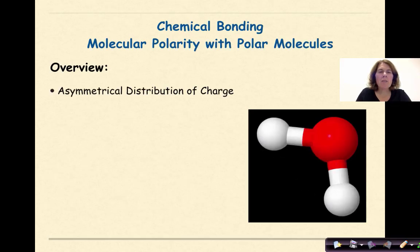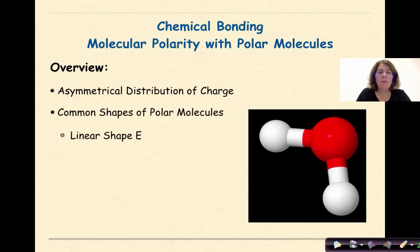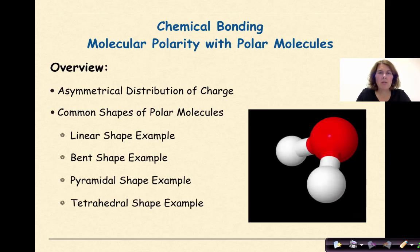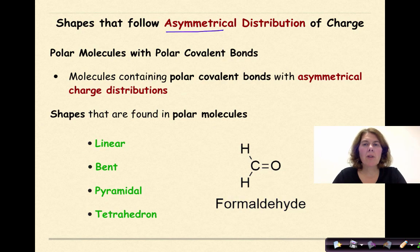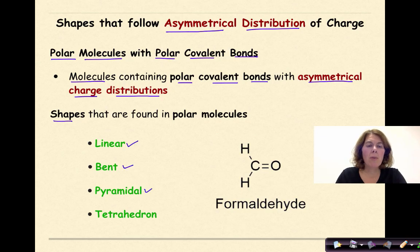Specifically, we're going to look at the asymmetrical distribution of charge within a molecule, and common shapes of polar molecules, including linear, bent, pyramidal, and tetrahedral shapes. We're looking at polar molecules with polar covalent bonds — molecules containing polar covalent bonds with asymmetrical charge distributions.